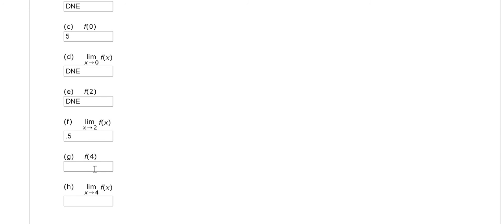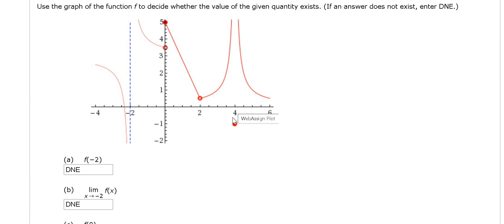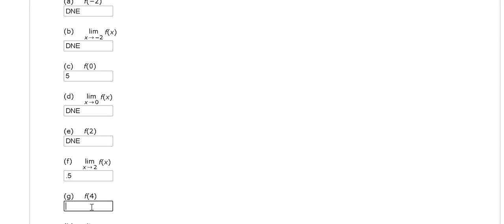f of 4 is the y value when x is 4. It looks like negative 1. When x is 4, there's actually a y value here, and it's negative 1.